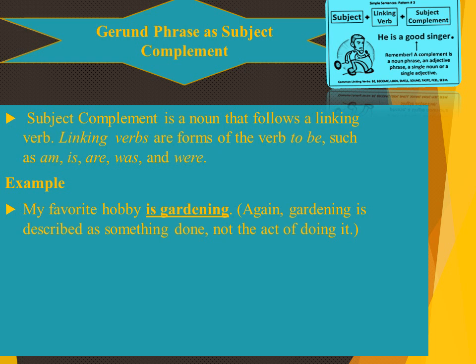Gerund phrase as subject complement — also called predicate nominative, which is the same thing. Subject complement gives more information about the subject. It is a noun that follows a linking verb. Linking verbs are forms of the verb 'to be': am, is, are, was. Example: 'My favourite hobby is gardening.' Here gardening is described as something done, not the act of doing it, so it is a gerund phrase acting as subject complement.